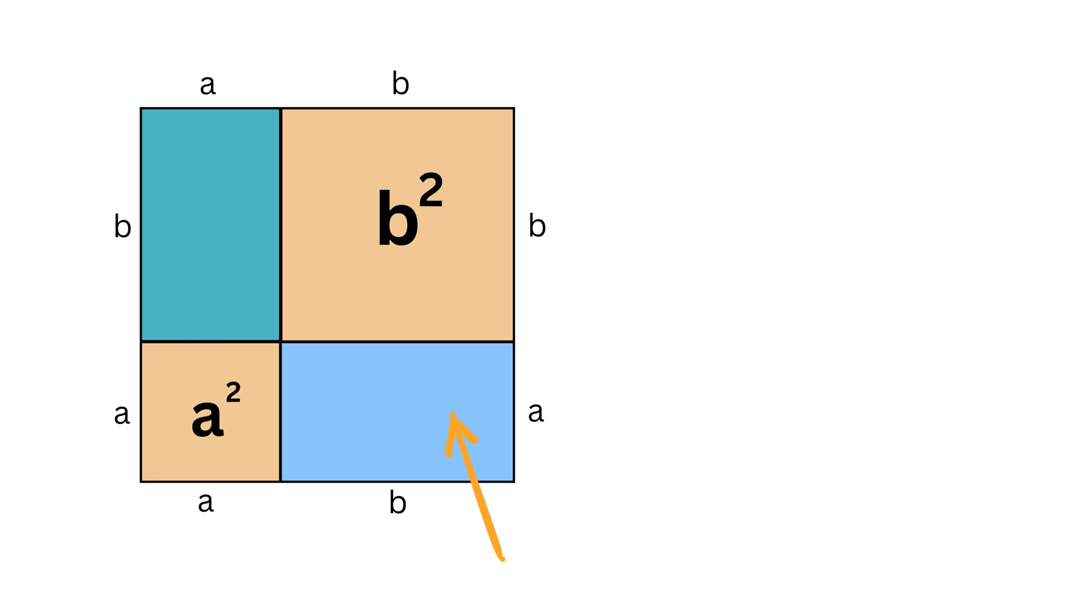Now for this rectangle, make a diagonal like this, and for this rectangle, make a diagonal like this. Both the diagonals will have the same length, right? Because both these rectangles have the same side lengths a and b. So let us label them as c.